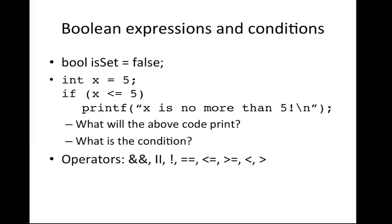We learned about Boolean expressions. A Boolean is just a value that's either true or false. Boolean expressions go inside conditions — for example, if x is less than or equal to 5, and x equals 5, that condition evaluates to true, so the code beneath it runs. Remember all the operators: double && and double || for combining conditions, double == (not single =) to check equality. Single = is for assignment; double == is a Boolean operator. Also less than or equal to, greater than or equal to.